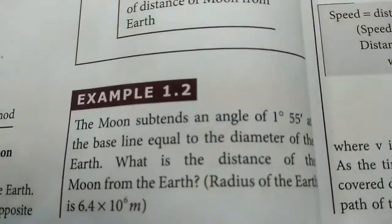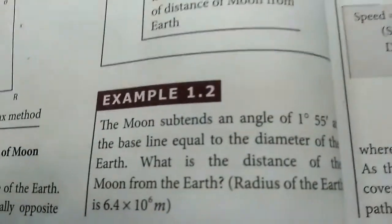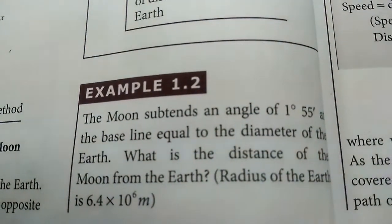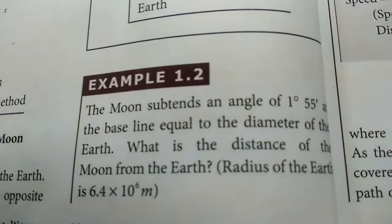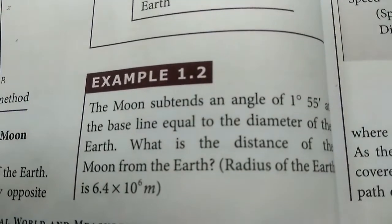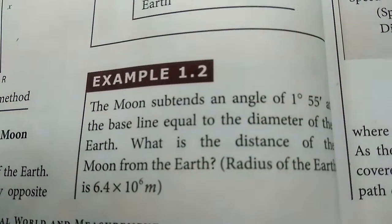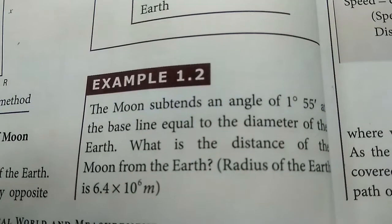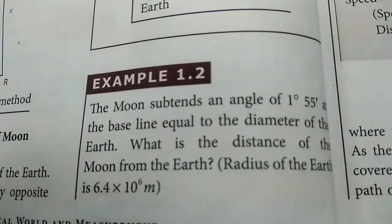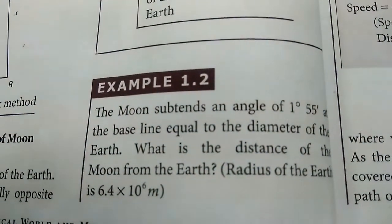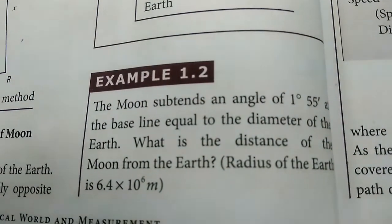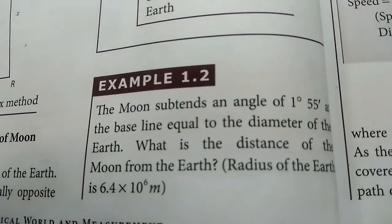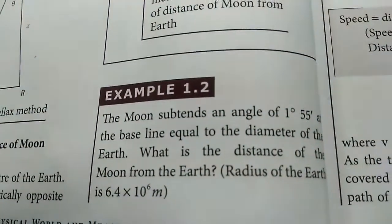Students, next one is our example 1.2, a second problem. The moon is subtended at an angle of 1 degree 55 minutes, at the baseline equal to the diameter of the earth. What is the distance of the moon from the earth? The radius of the earth is 6.4 into 10 power 6 meters.